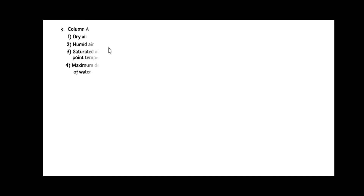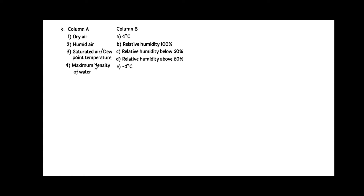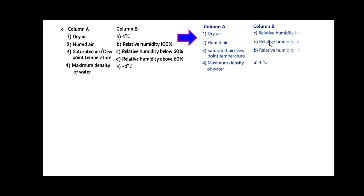Next: column A gives dry air, humid air, saturated air, and dew point temperature. These can be matched as follows: dry air — relative humidity below 60%; humid air — relative humidity above 60%; saturated air or dew point temperature — relative humidity 100%. Maximum density of water is at 4 degrees Celsius.